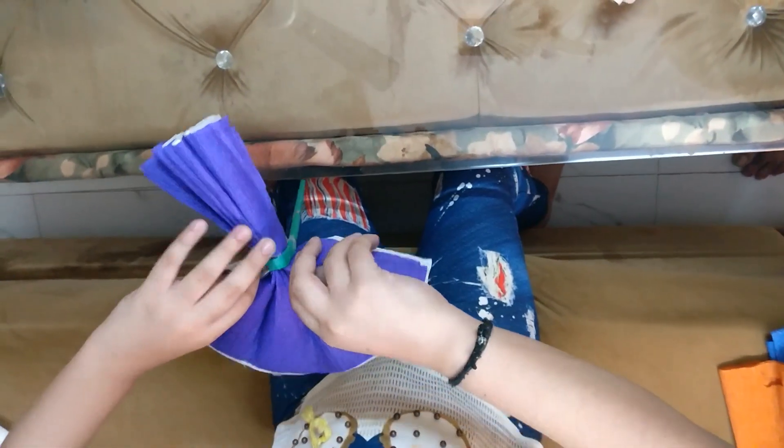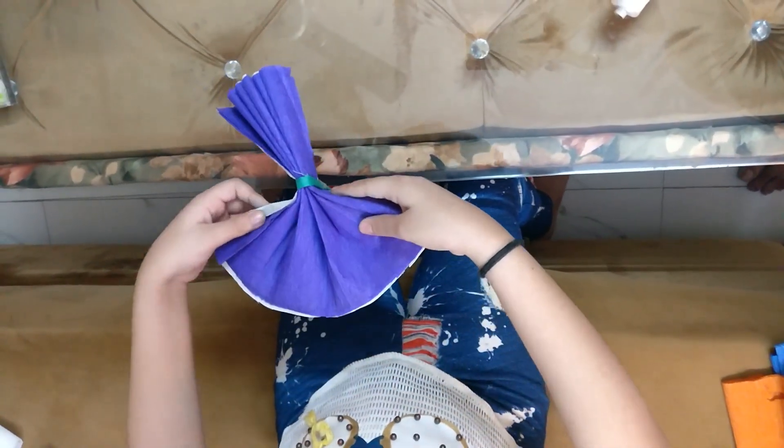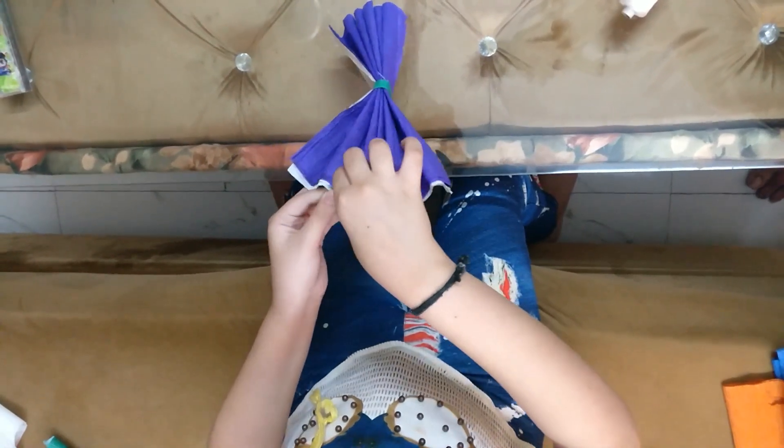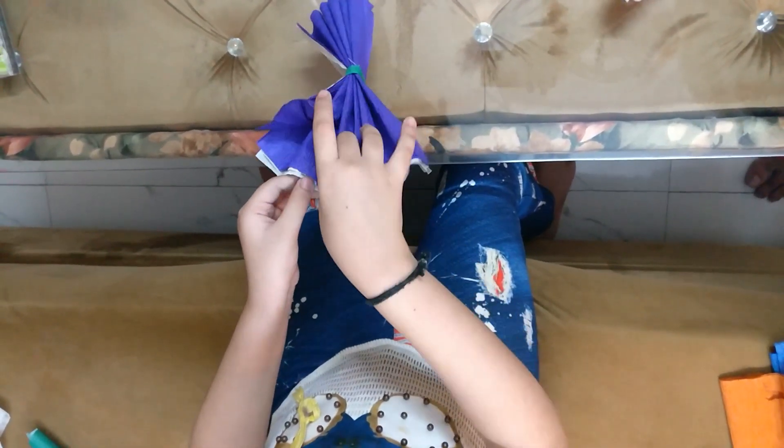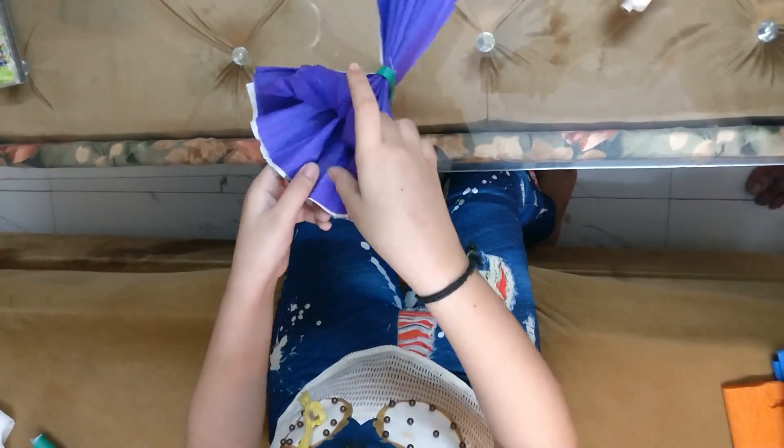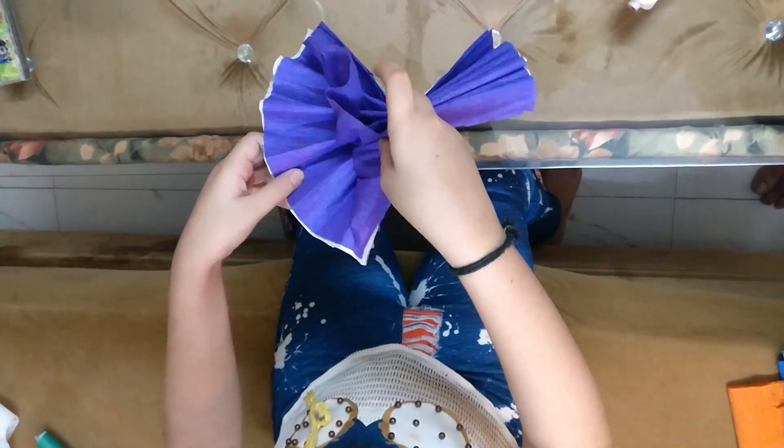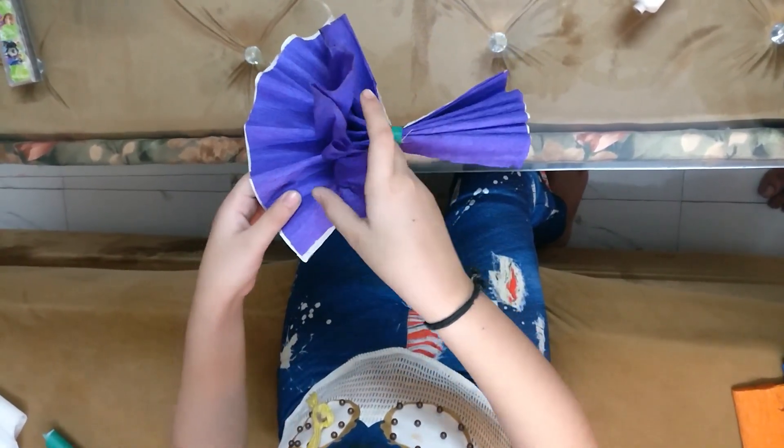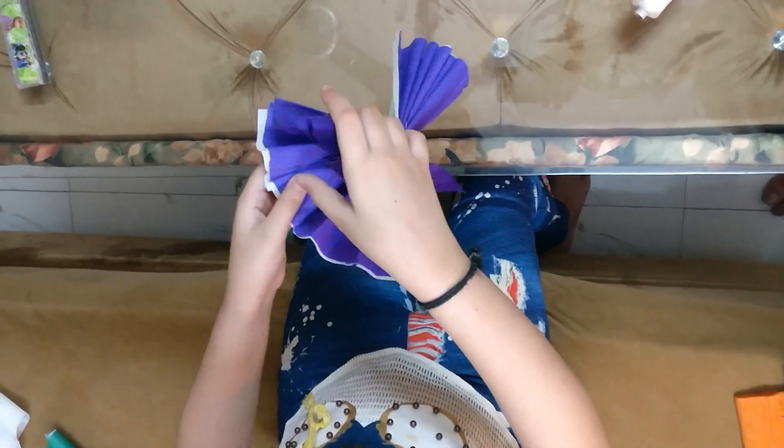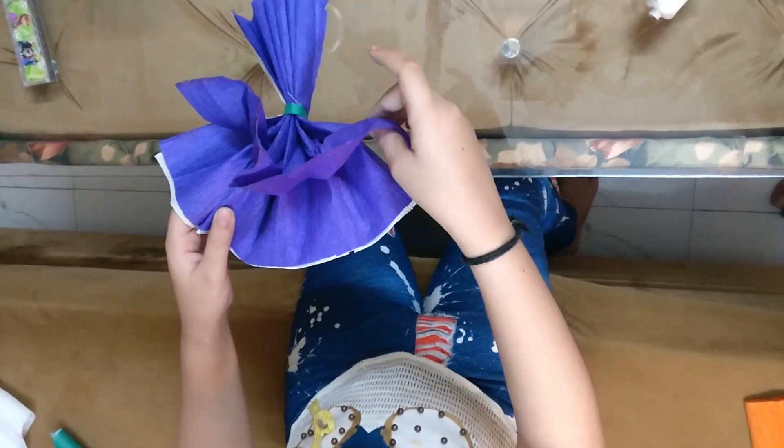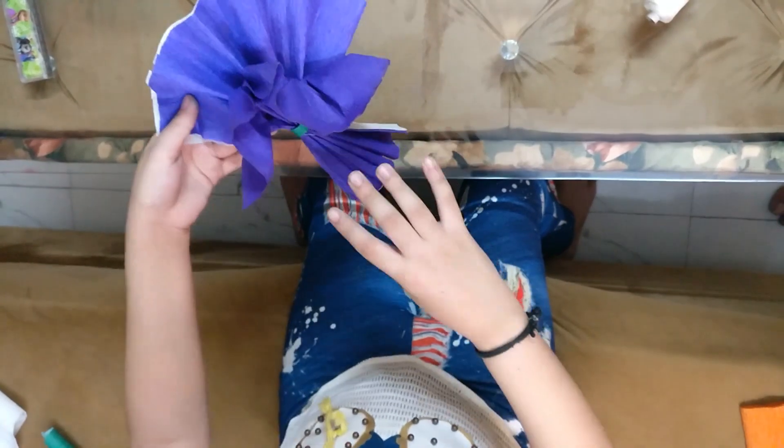We have the top two purple layers and the bottom two white layers. So the upper two layers will be folded like this, and the downward two layers will be folded like the upper two layers only.